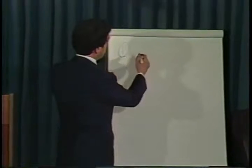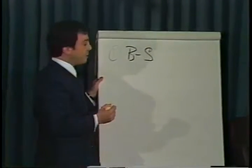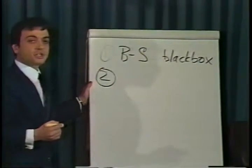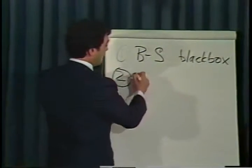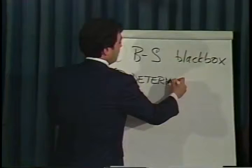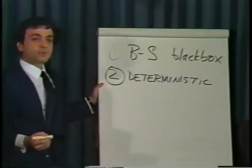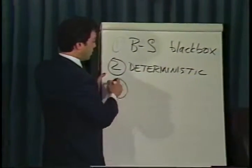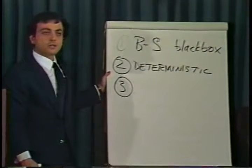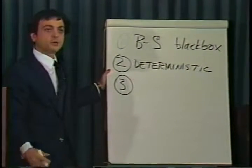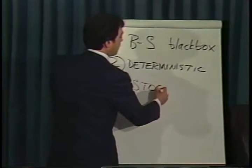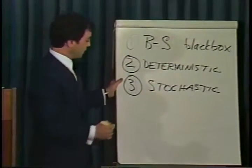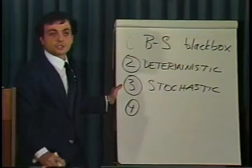In the first part, we shall emphasize that the Black-Scholes model is just a black box, so we call that the Black-Scholes black box. In the second part, we will look at the world as if it were deterministic and how an option pricing formula would look like. In the third part, we will relax the assumption of a deterministic world and assume the world is probabilistic or stochastic, and we shall adjust the deterministic formula to fit a stochastic world. Finally, we can talk about the extensions of the Black-Scholes formula.